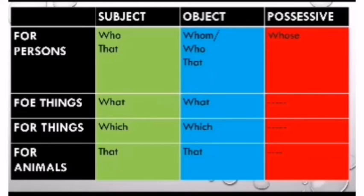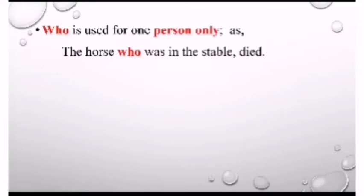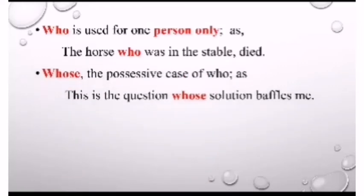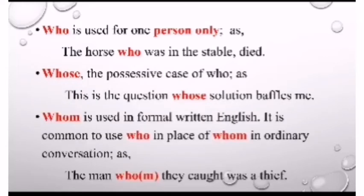Subject means the doer. Object refers to that on which the impact of the verb falls. We also have a possessive form which shows belongingness. Certain rules: 'who' is used for a person, and 'whose' is the possessive case of 'who.' 'Which' is used in formal written English only. It is common to use 'who' in place of 'whom' in ordinary conversation, but many grammarians prefer to go with 'whom' only, which is why it is still in use in formal English.